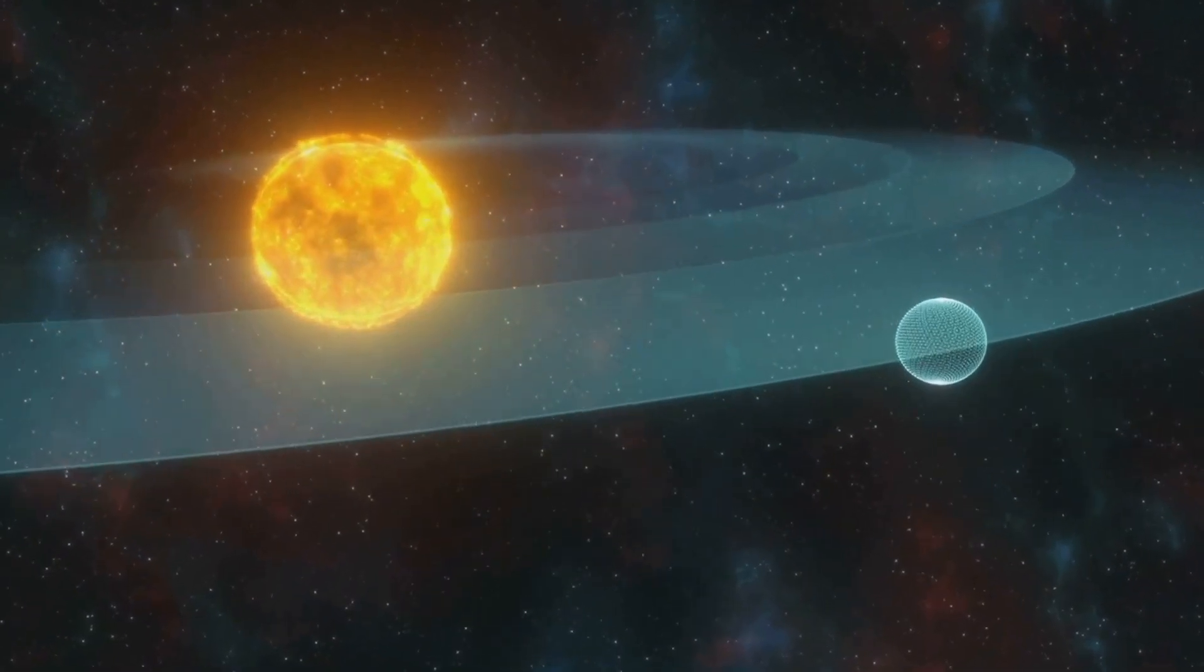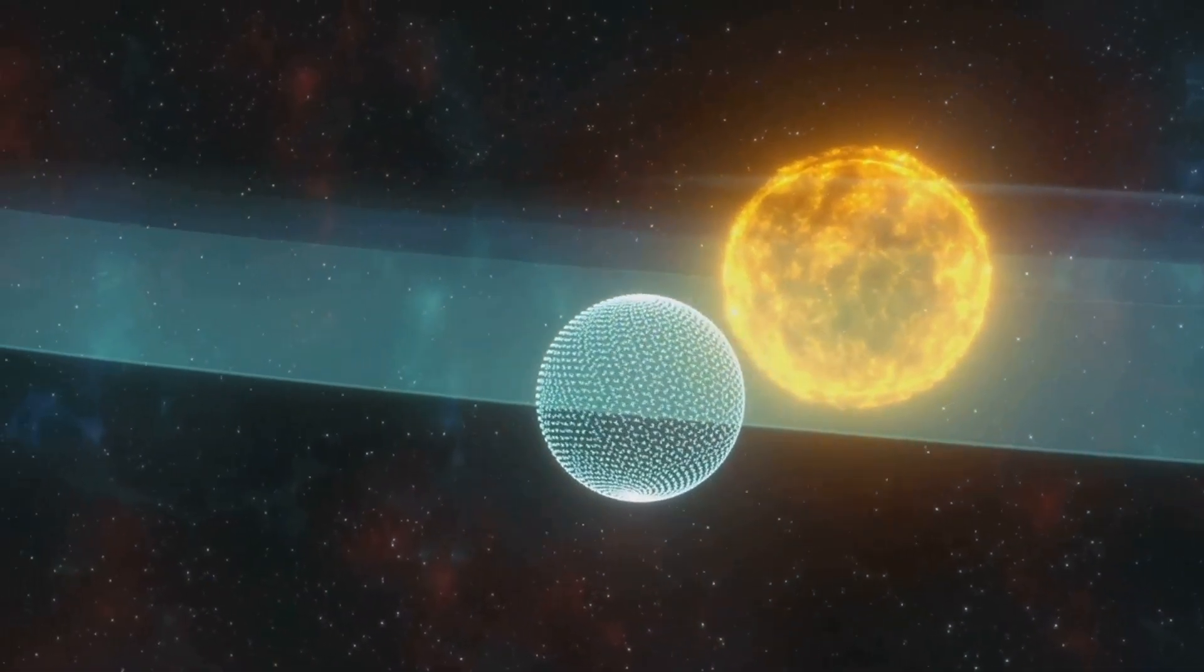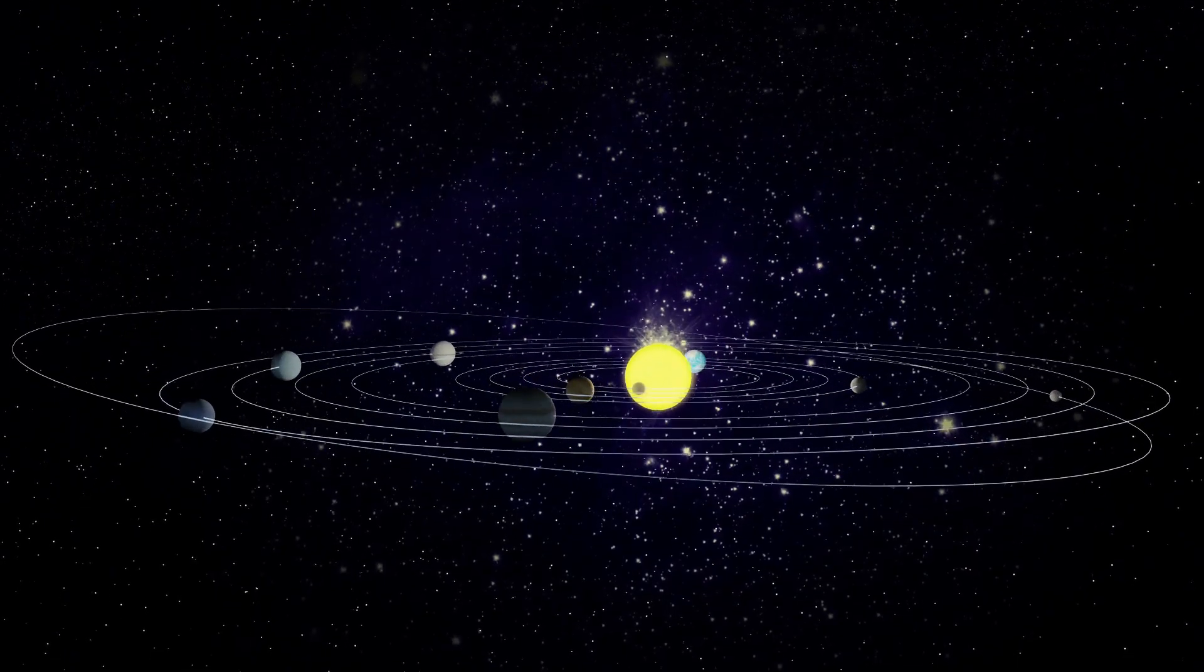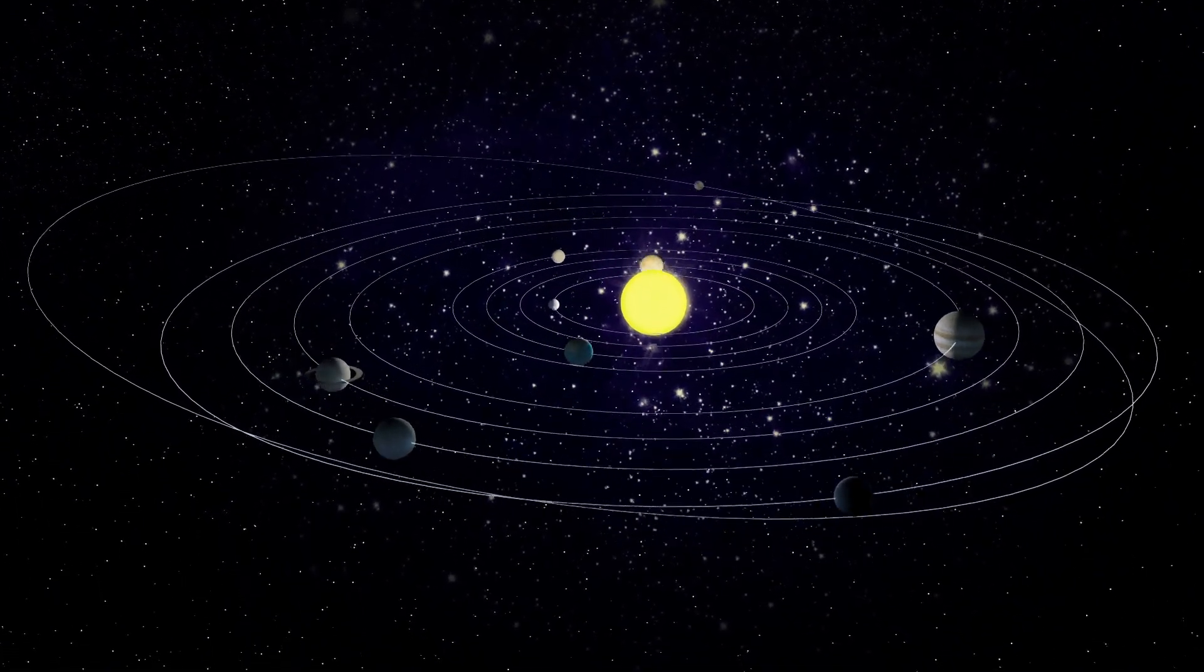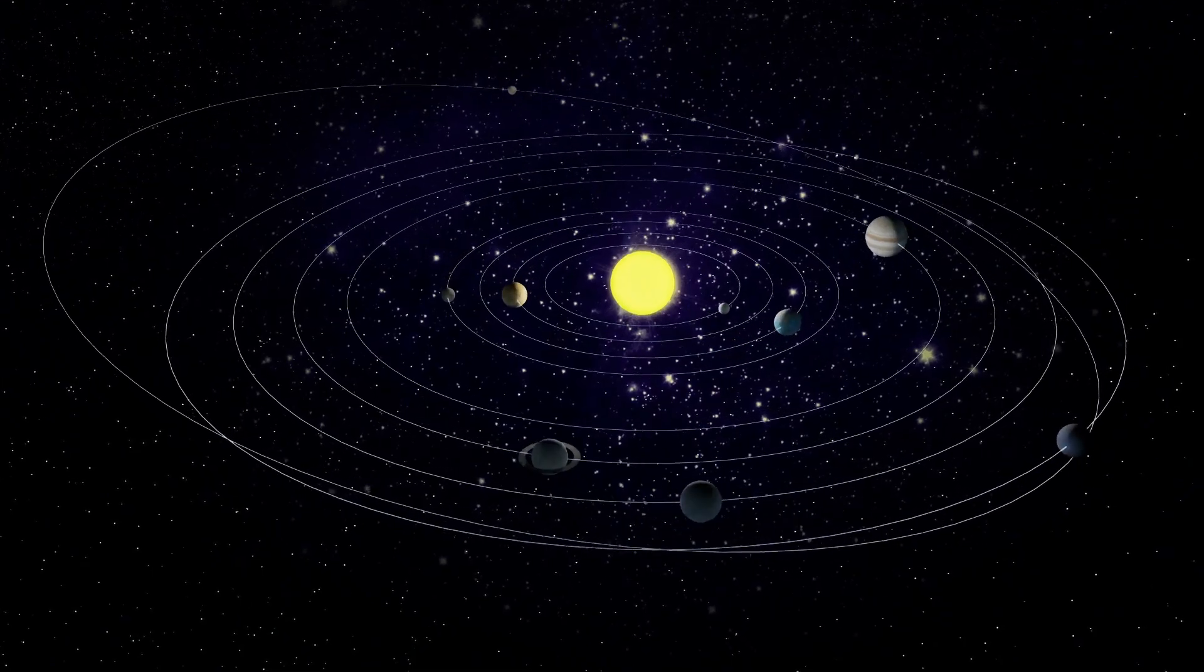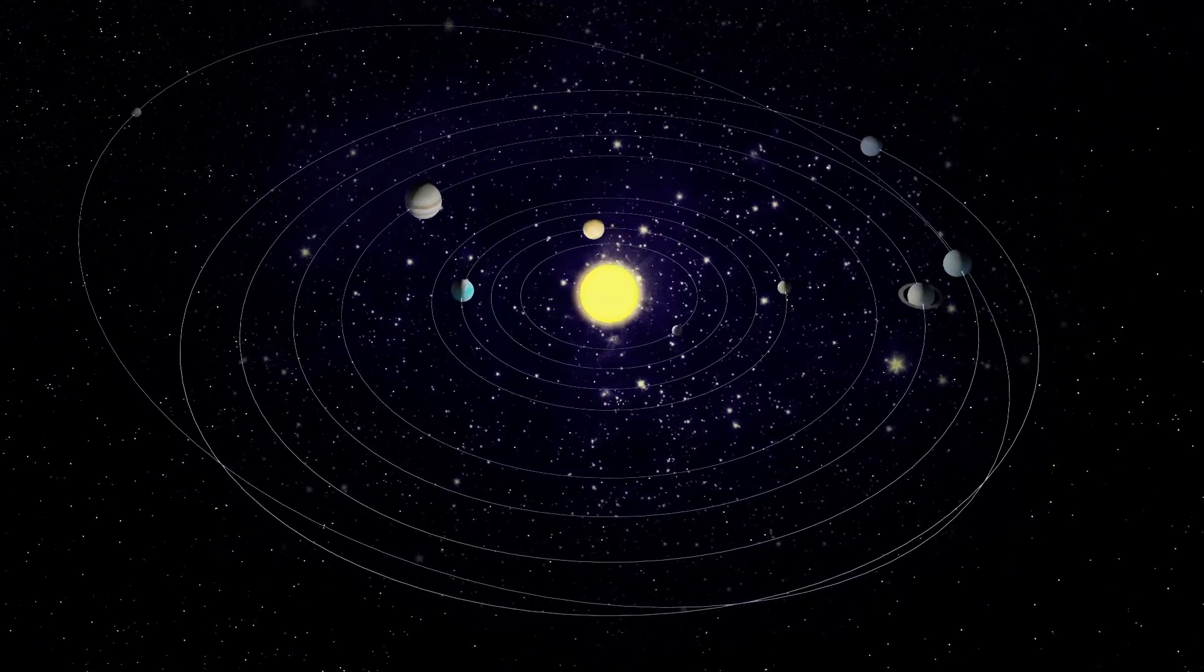Another way is to look for a star's wobble. This technique, known as the radial velocity method, detects the gravitational influence of a planet on its star. Just as a planet is pulled by the gravity of its star, the star is also slightly pulled by the gravity of its planet. This mutual gravitational tug causes the star to move in a small but detectable wobble.